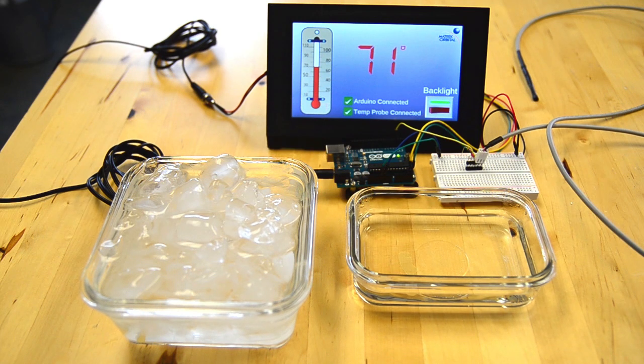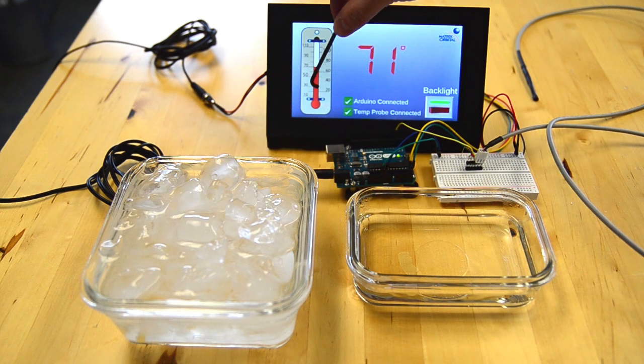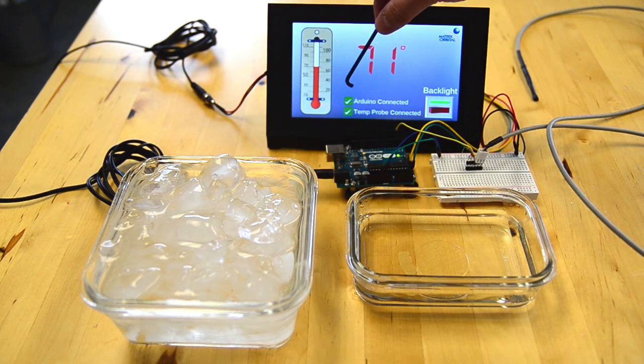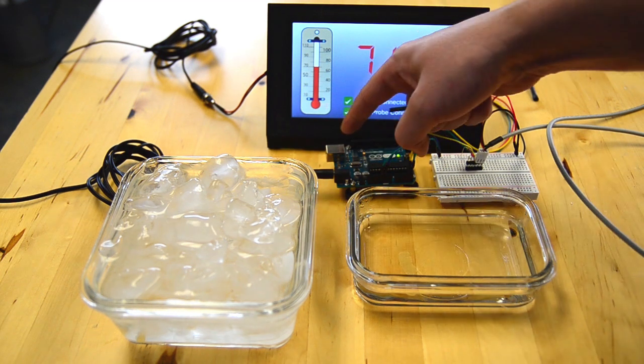What we're going to be doing is showing off a label, a bar graph which is a thermometer, two little toggles, and a backlight toggle. So we're going to show you everything from the beginning.